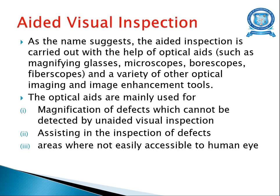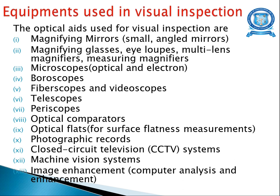These optical aids are mainly used for magnifying defects which cannot be detected by unaided visual inspection, for assisting in the inspection of defects, and can be used in areas where human eyes are not easily accessible. The equipment used in visual inspection includes optical aids such as magnifying mirrors, magnifying glasses, multi-lens magnifiers, measuring magnifiers, microscopes, borescopes, fibroscopes, videoscopes, telescopes, optical comparators, optical flats, photographic records, closed-circuit television systems, machine vision systems, and image enhancement tools.